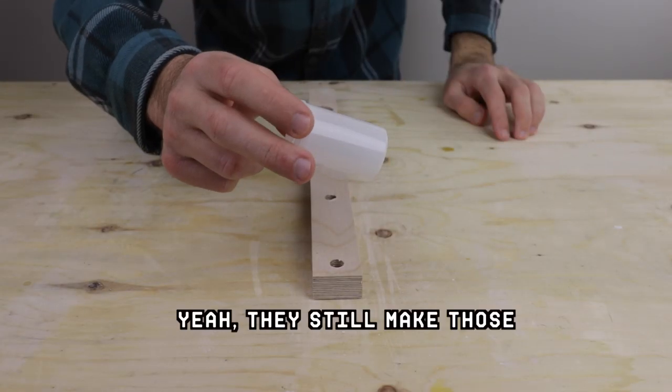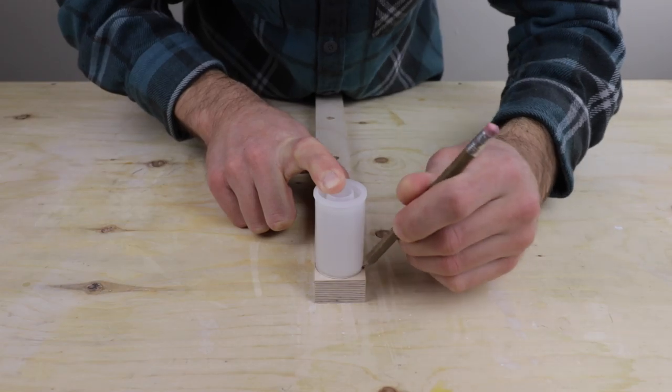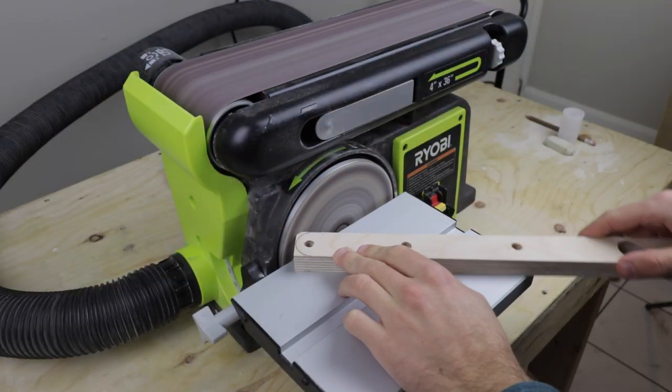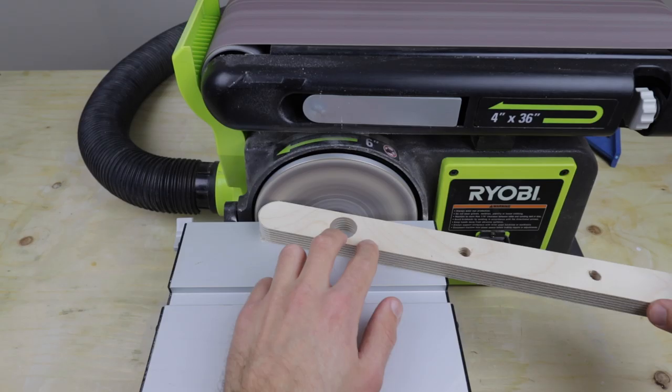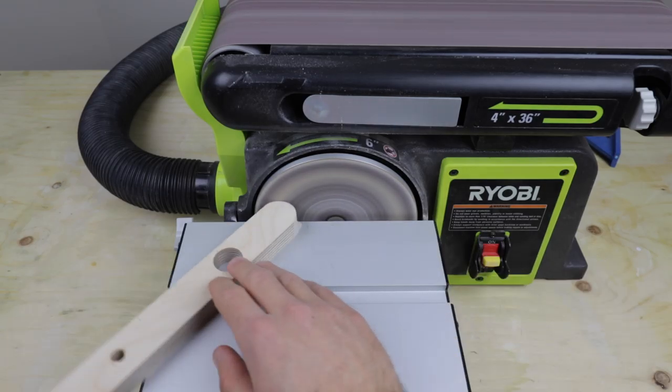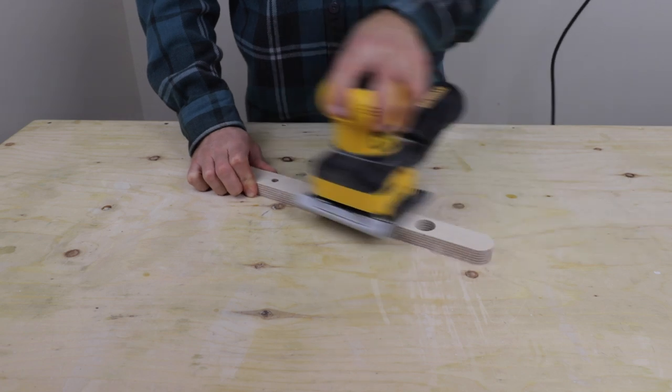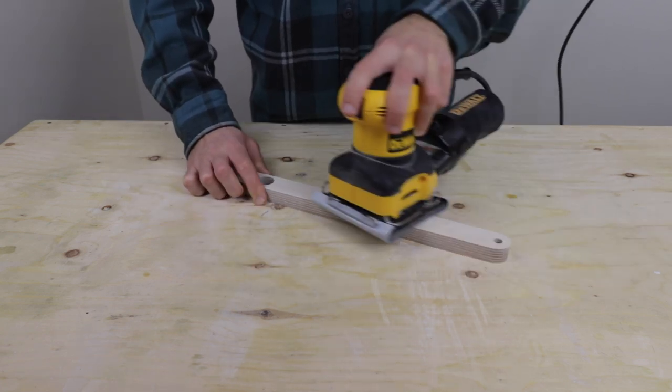Then I used a film canister to trace out a curve on both ends of the arm. I then used my disc sander to round out both ends of the wooden arm, and also sanded the arm down to 220 grit using my palm sander.